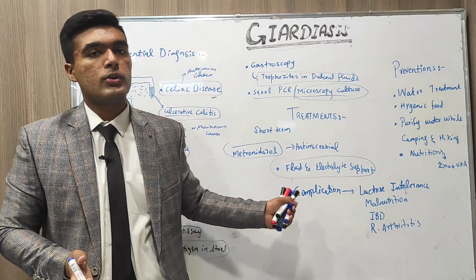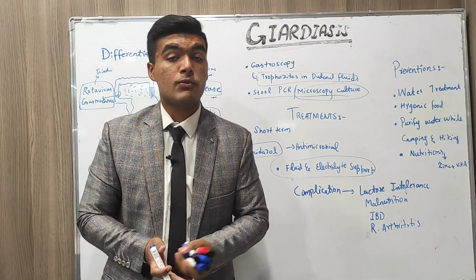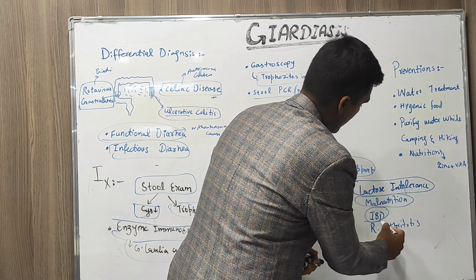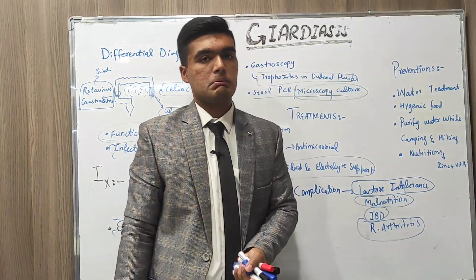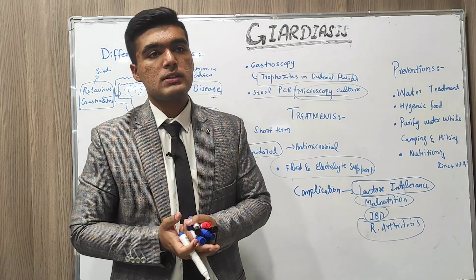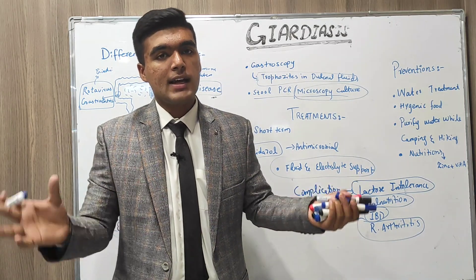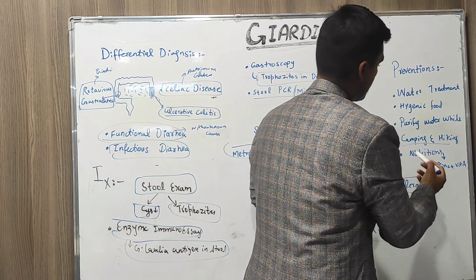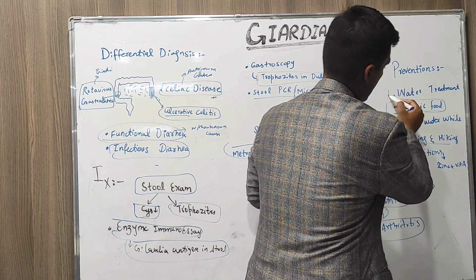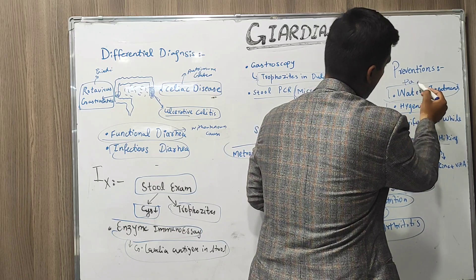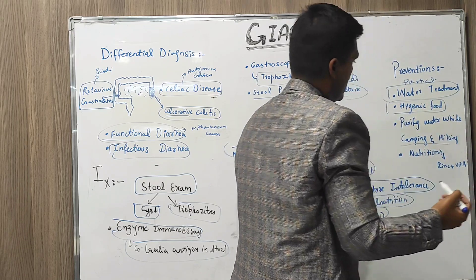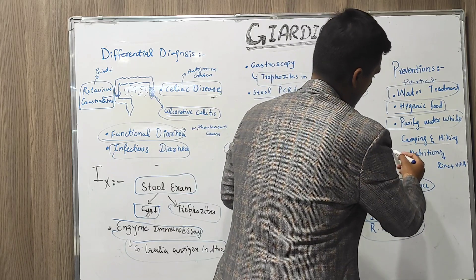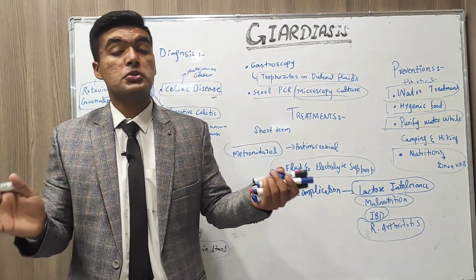Complications of Giardiasis include development of lactose intolerance, malnutrition, inflammatory bowel disease, and reactive arthritis. For prevention, avoid drinking unhygienic or unclean water while travelling to hilly areas for hiking and camping. Use hygienic food. There should be particular water treatment plants for common populations, and water must be purified before use. Nutrition such as zinc and vitamin A are most necessary.